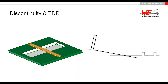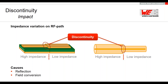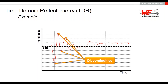Before jumping into SMA connector simulation and measurement, we talk about discontinuities and TDR. Discontinuities can have different causes such as geometrical or material changes, resulting in reflections and field conversions. The TDR (time domain reflectometry) measurement with a network analyzer identifies these discontinuities by showing impedance variation over time. We can trace different impedance variations back to specific influences like changes from cable to connector or connector to PCB. In practice we will never have a perfectly straight 50-ohm line, but we want to stay as close as possible to 50 ohms.